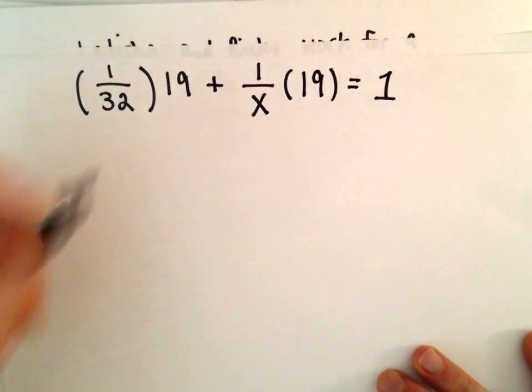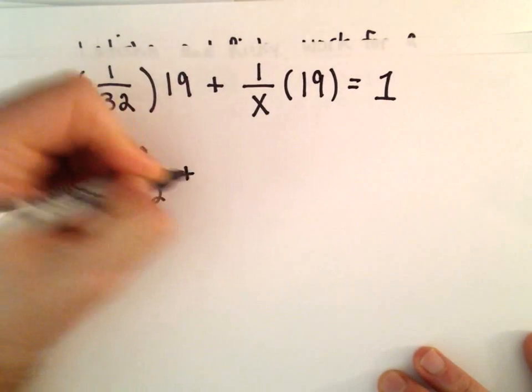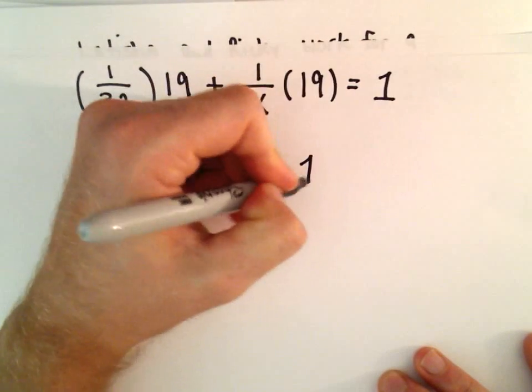So now we've got our equation to solve. We have 19 over 32 plus 19 over x equals 1.